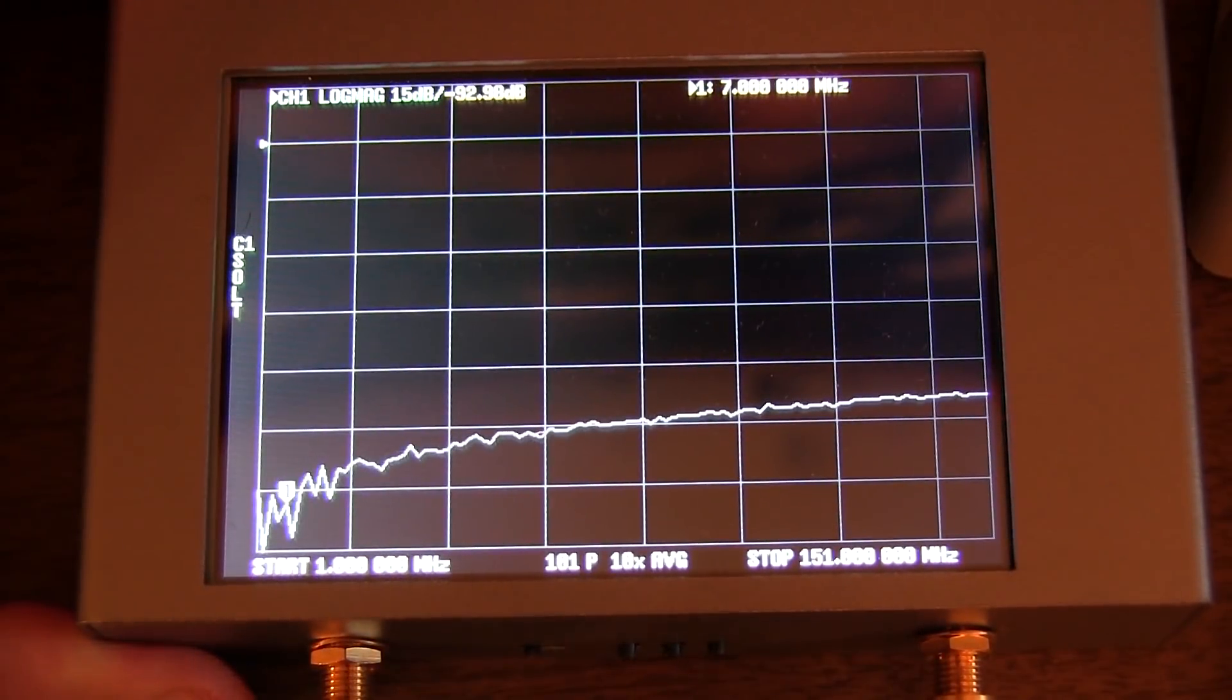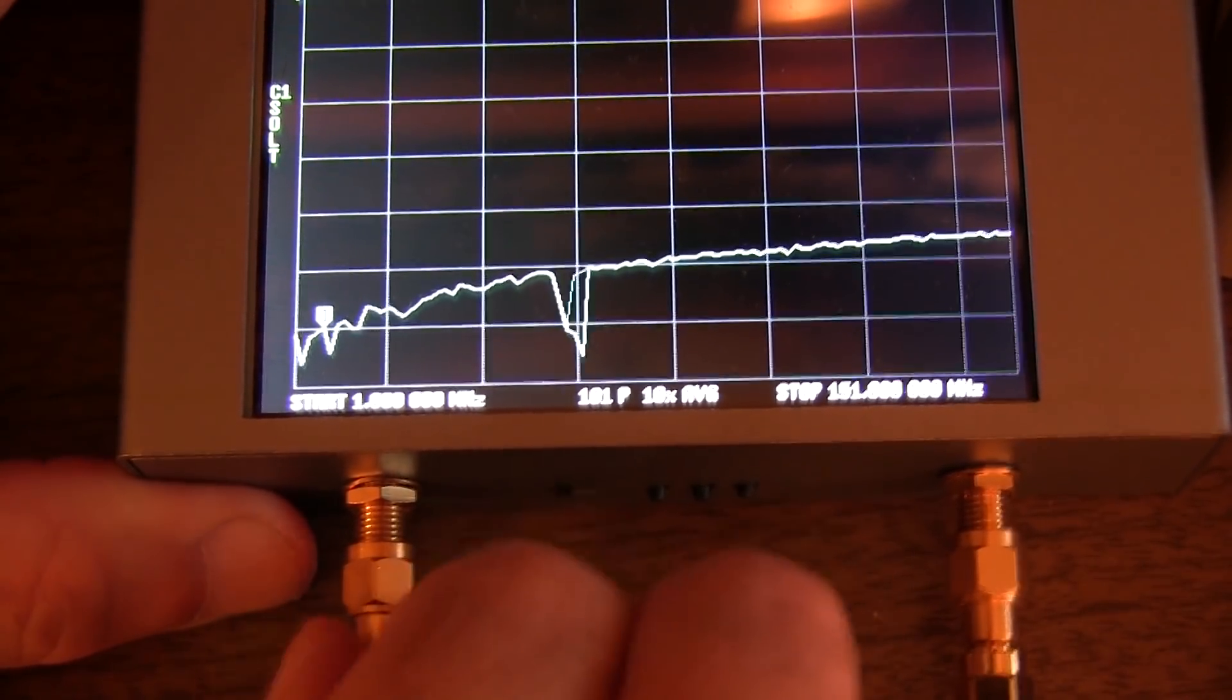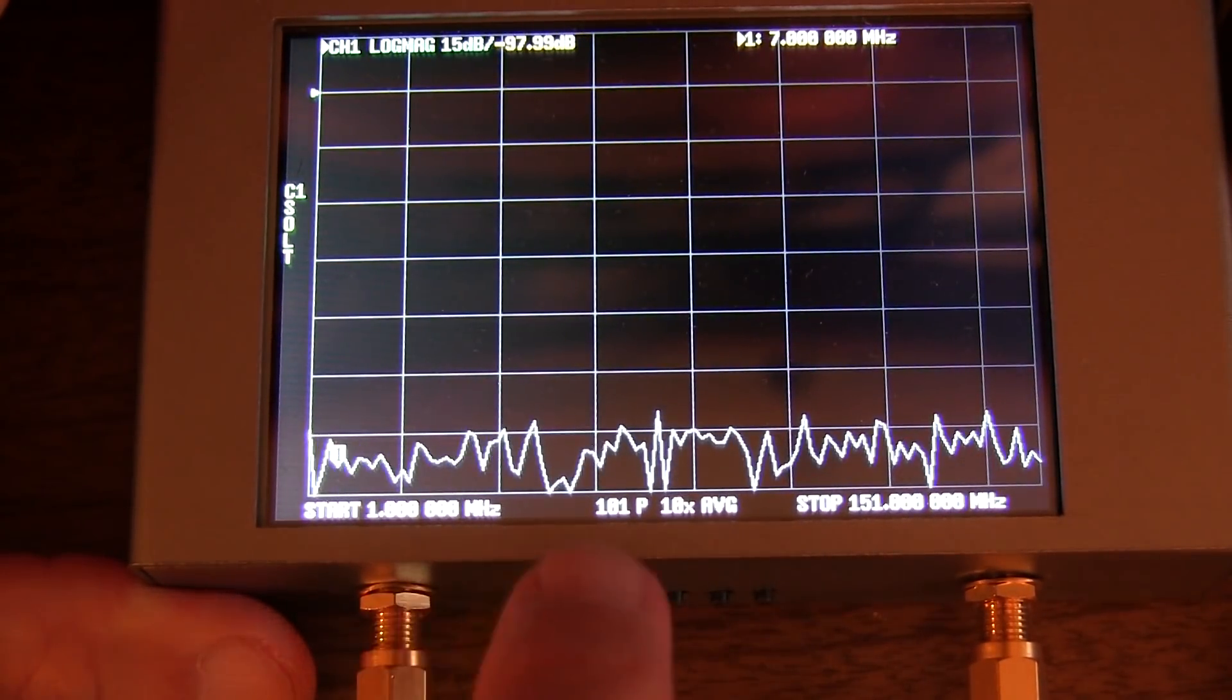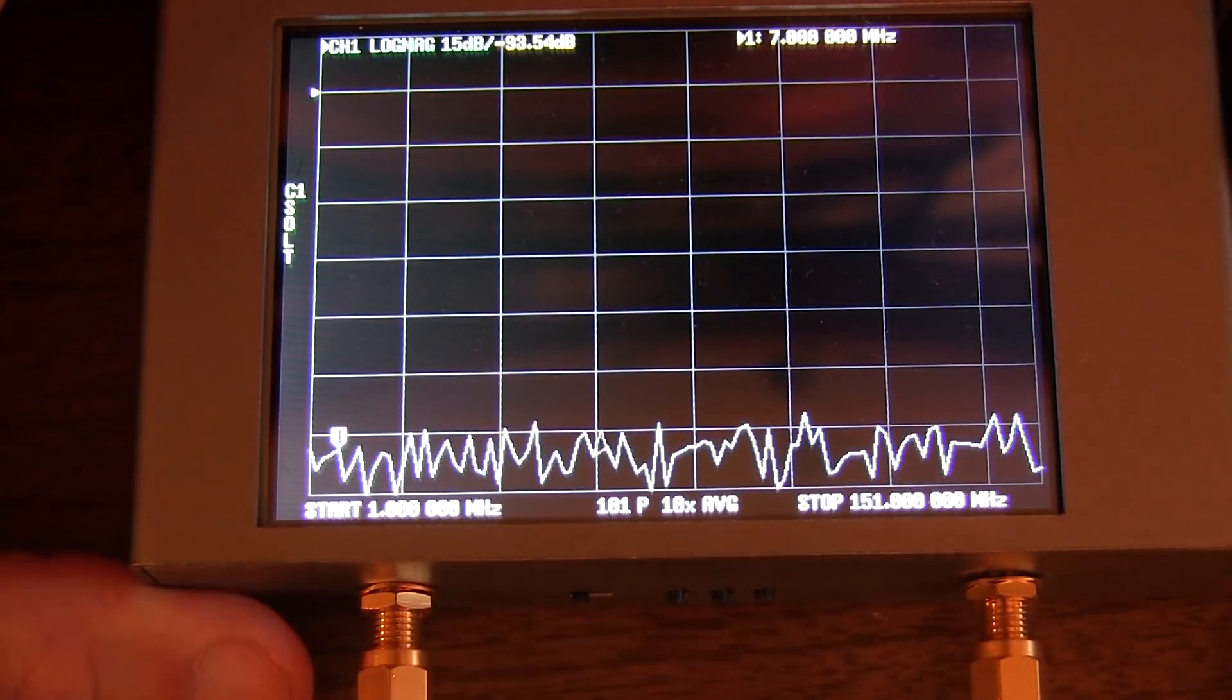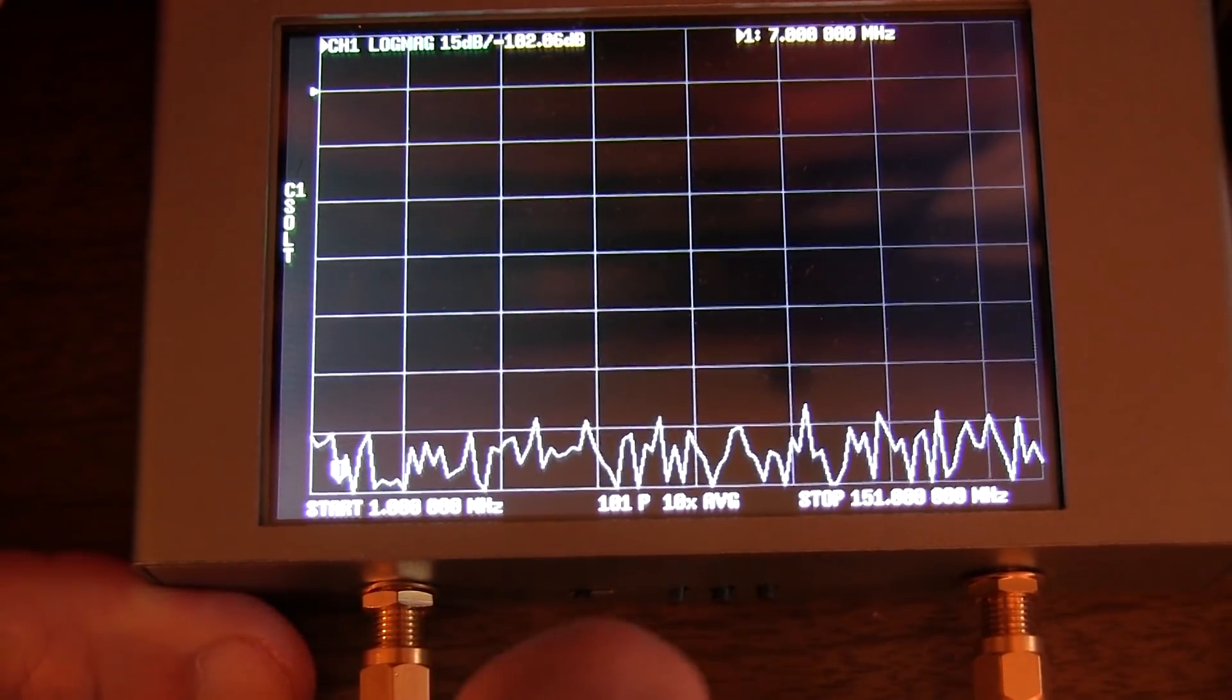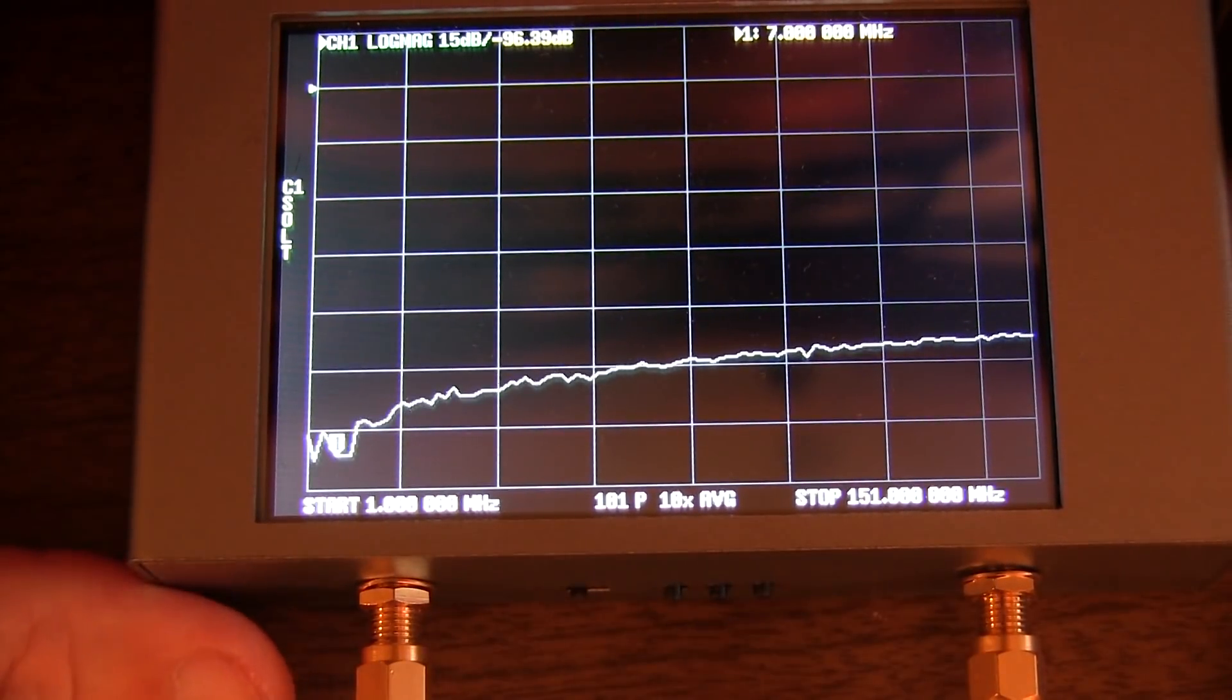Now, just to get an idea of that, I'm going to simply disconnect my source here from port one. And we could see that those numbers are down around minus 100, minus 97, minus 98 dB of isolation just inherent into the nano VNA. So we're really close to that, the bottom of that noise floor, the measurable noise floor, in looking at isolation at the lower portion of the HF band.